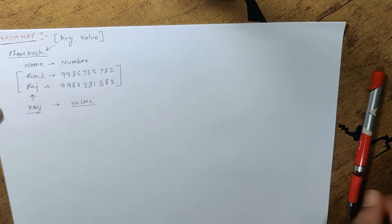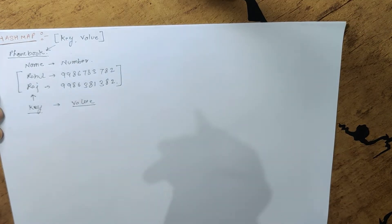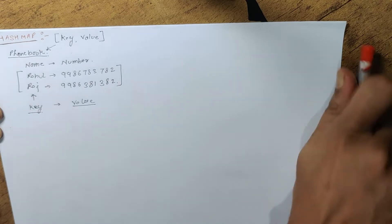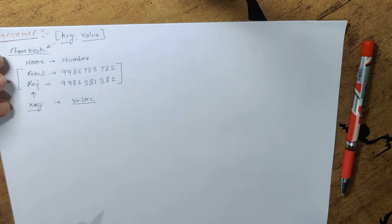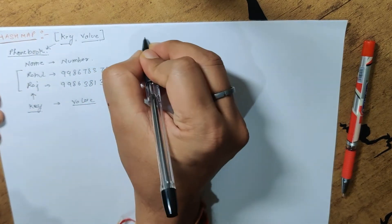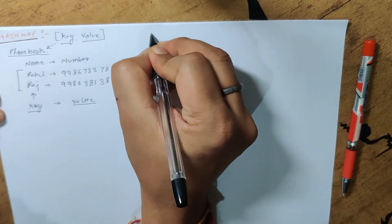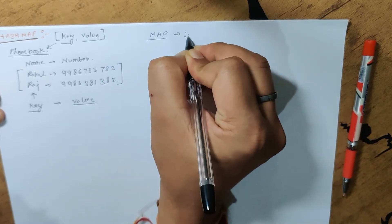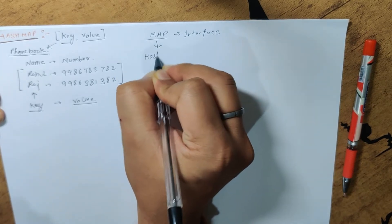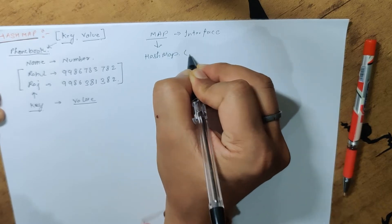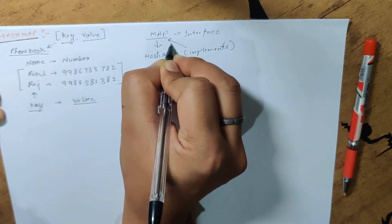Now how does hash map work internally in Java? To understand this, we have already seen how hashCode and equals works in Java. This is the key and this is the value. Hash map is an implementation of the map interface — we have something called the map interface, and hash map implements this interface.